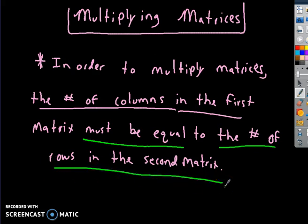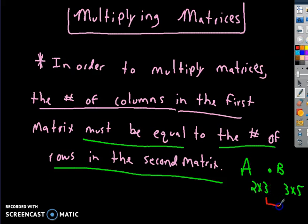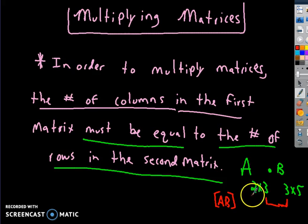What that means is this: if matrix A is a 2 by 3 matrix, and you're multiplying it by matrix B, and matrix B is a 3 by 5 matrix — since the number of columns in A and the number of rows in B match, those middle numbers are equal to each other, so these two matrices can be multiplied. The new matrix A times B would have the dimensions of the first and last numbers, so the new dimensions would be a 2 by 5 matrix.